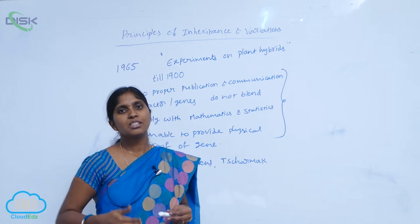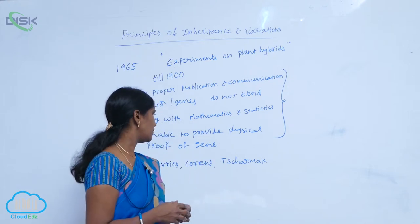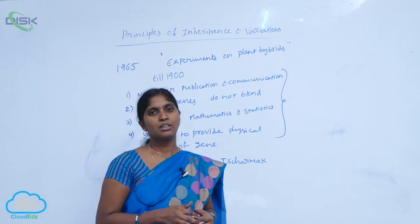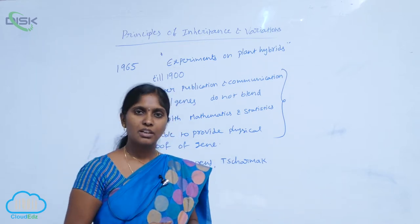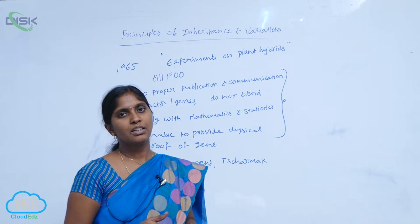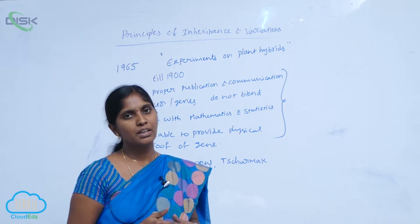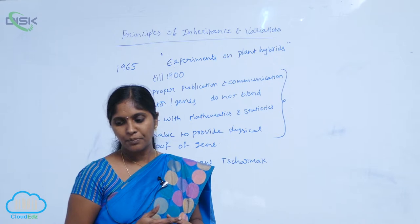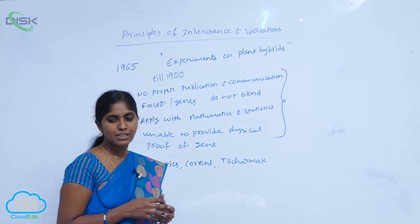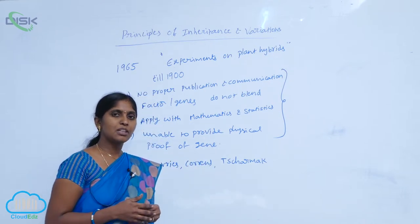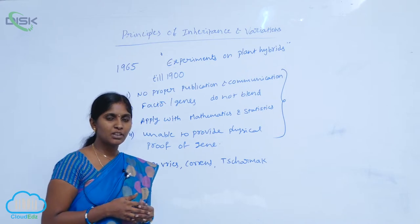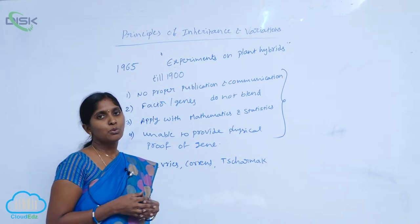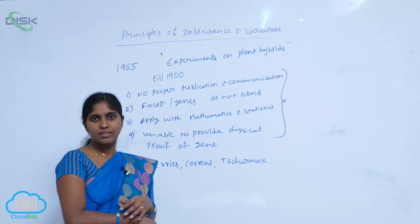After his death, his discoveries were rediscovered by scientists De Vries, Correns, and Tschermak. They re-conducted the experiments of Mendel and are called the rediscoverers of Mendel's experiments. At the same time, the microscope was invented, and the nucleus was found within the cell, and chromosomal material was also found at the same time.